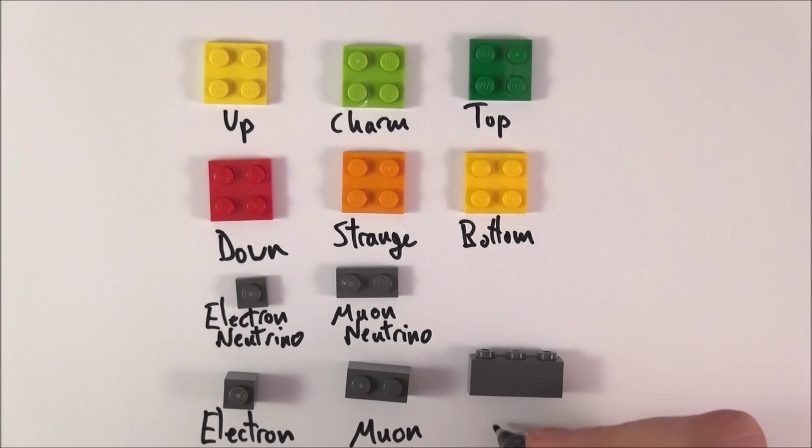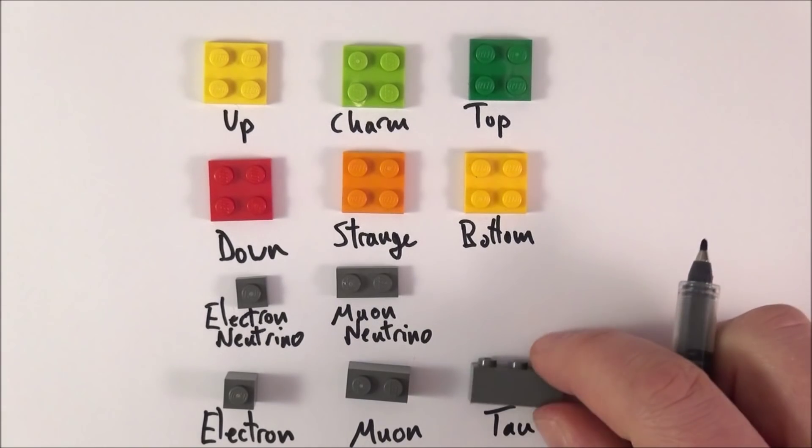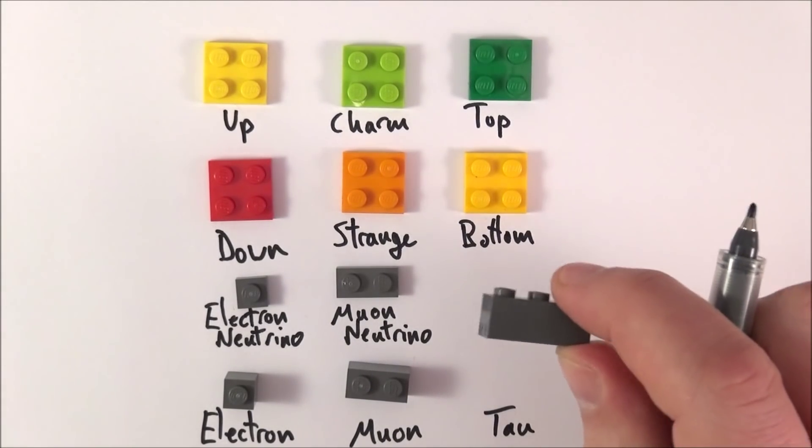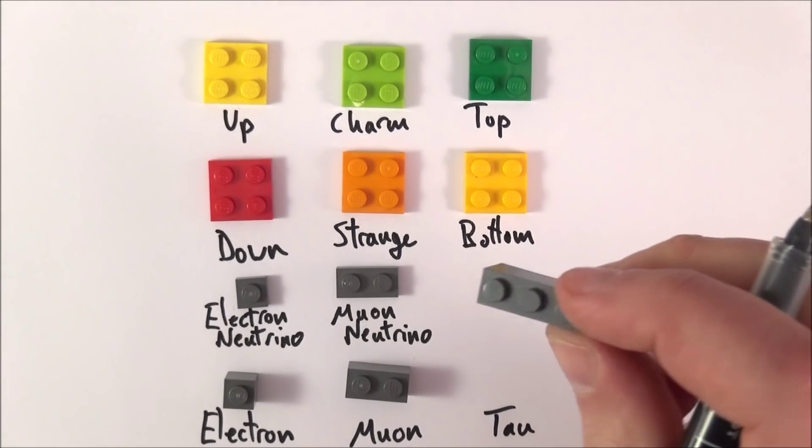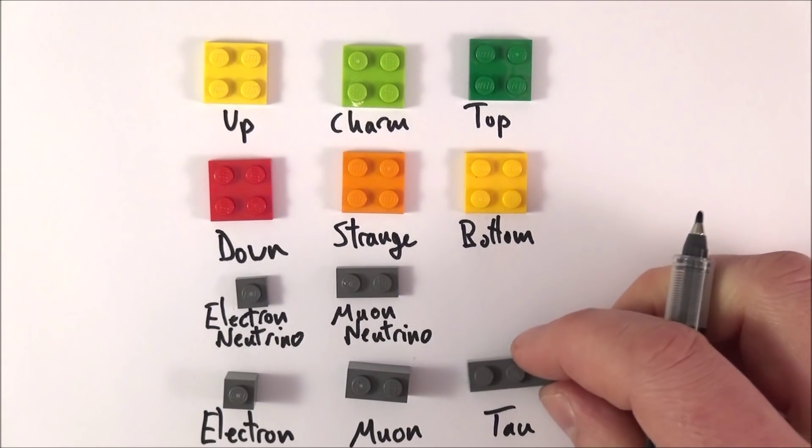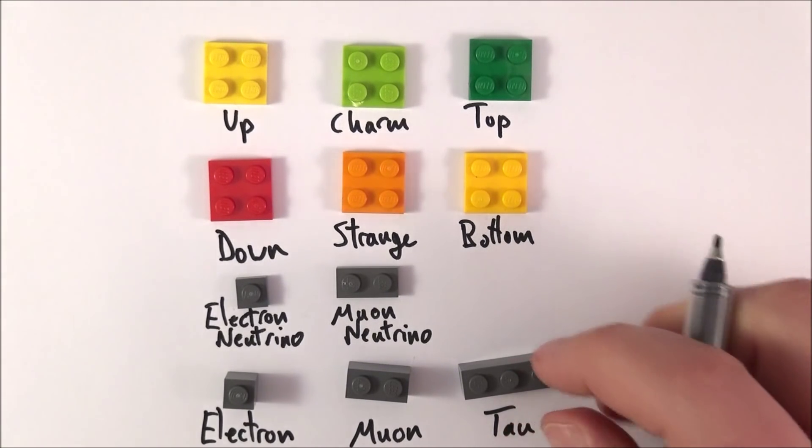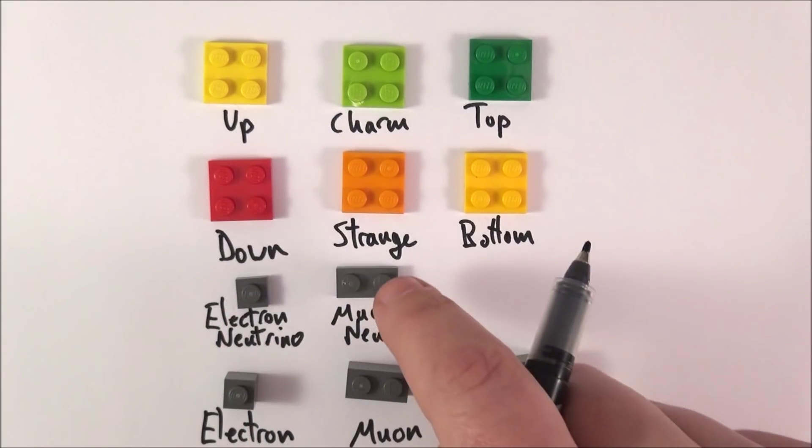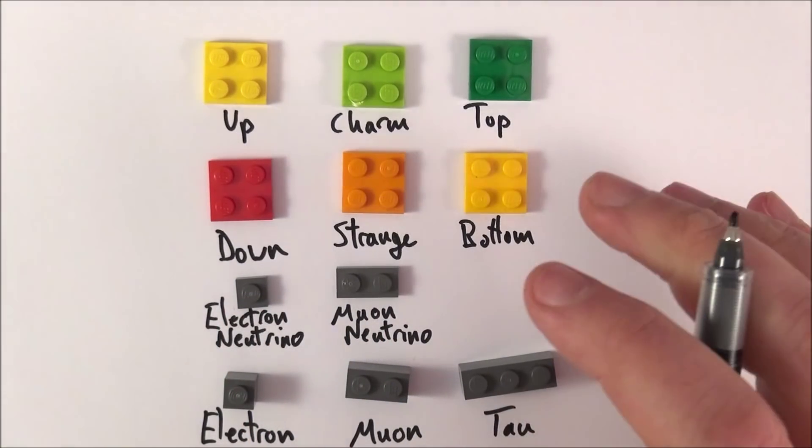This one here is called a tau particle. A tau particle is a negative particle, but this has a mass equivalent to the mass of a gold nucleus. It's basically an incredibly heavy electron. That means not only do we have electron and muon neutrinos, we also have tau neutrinos.